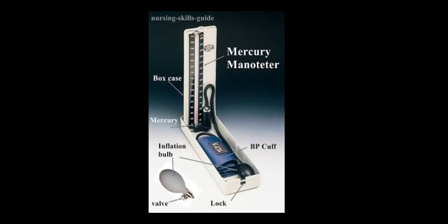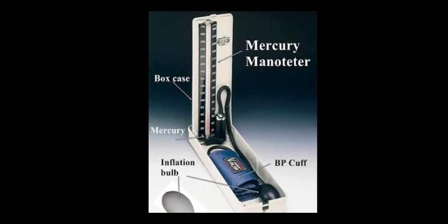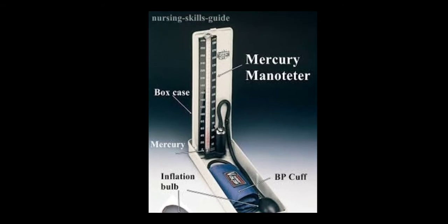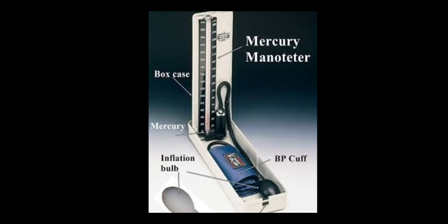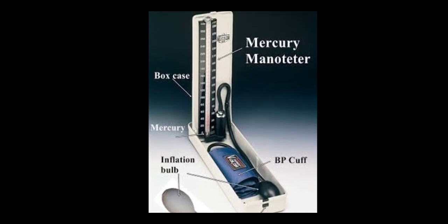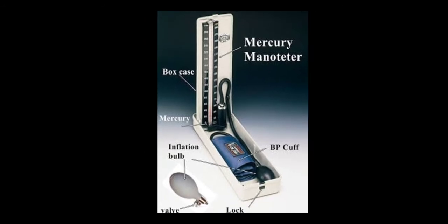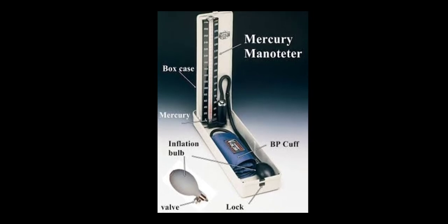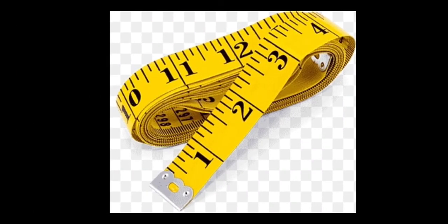Next is the mercury sphygmomanometer. In the mercury sphygmomanometer, mercury forms the column for measuring blood pressure. The mercury column will rise when we inflate the bulb. These are the parts of the mercury sphygmomanometer.